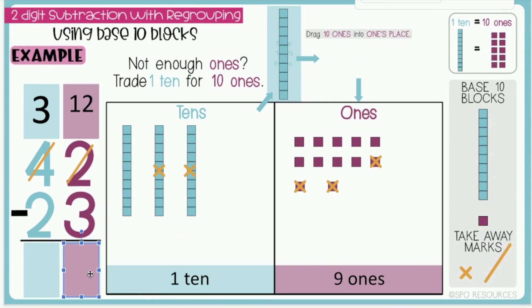12 minus 3 is 9, and 3 minus 2 is 1. So 42 minus 23 is 19.